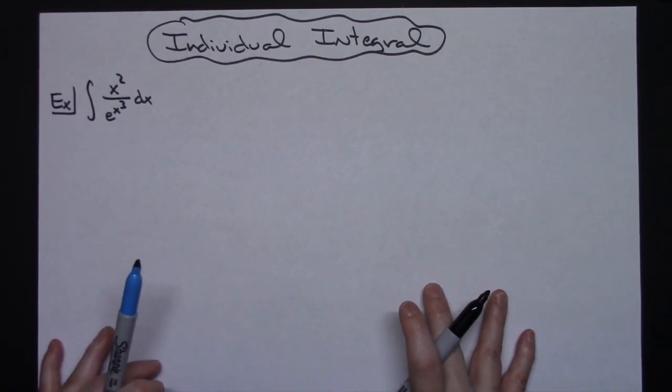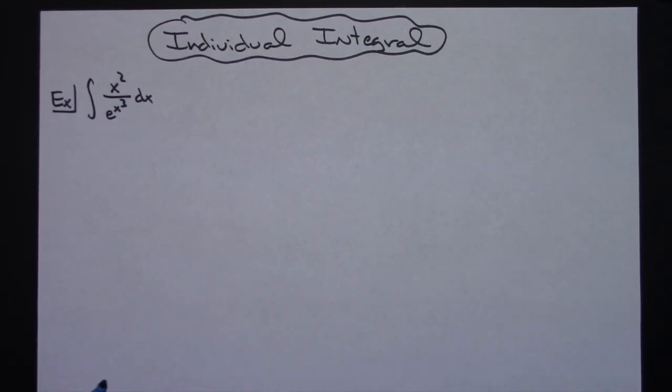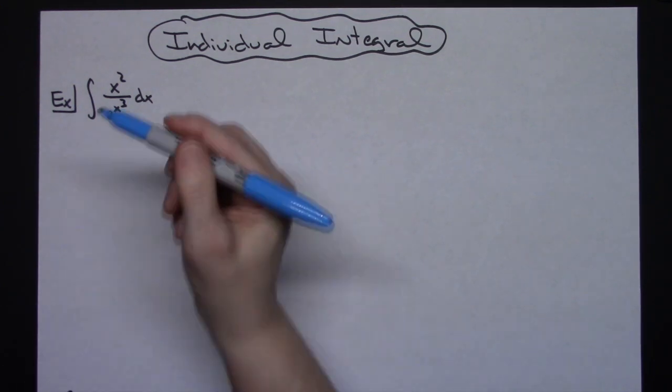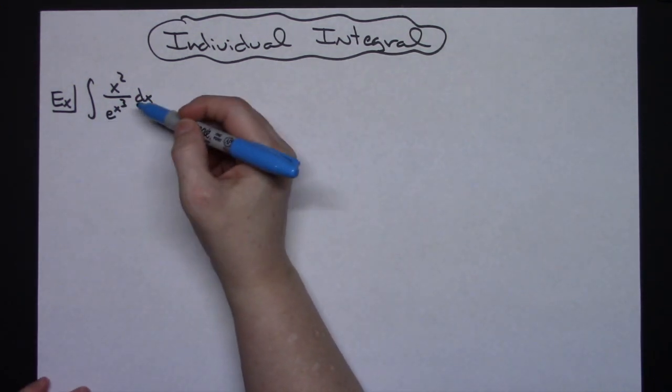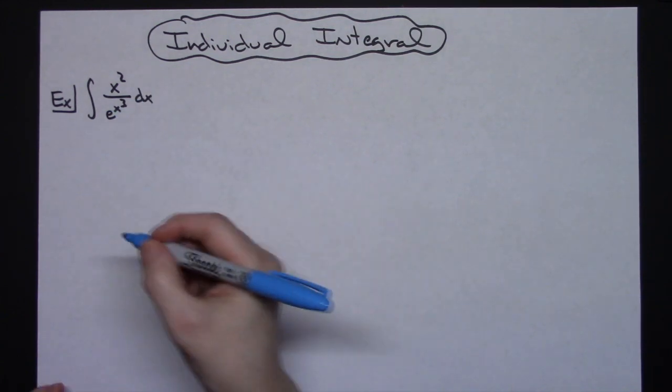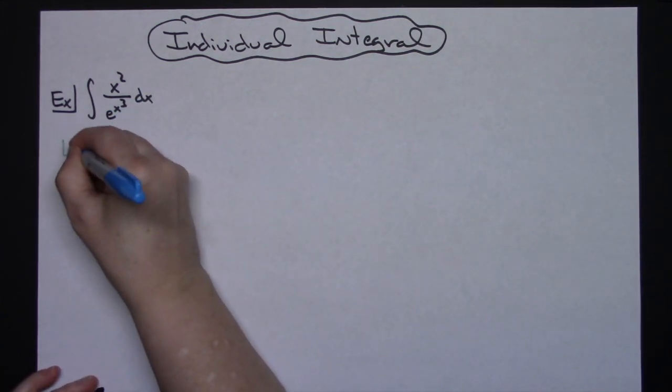About the only tweak in it is that we are going to use two different substitutions throughout the problem to get all the way to the end. So initially here we're going to let our u be x to the third just to start a regular u substitution type problem.